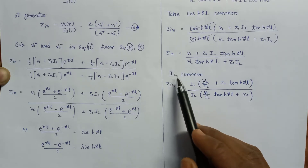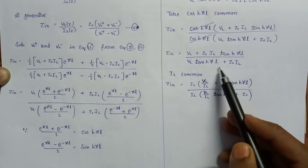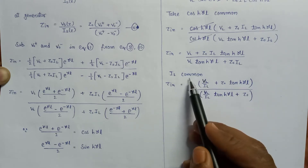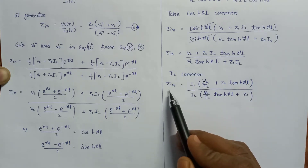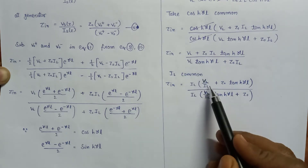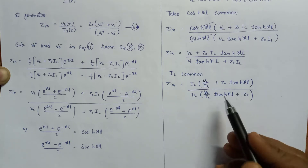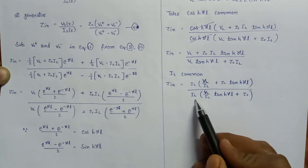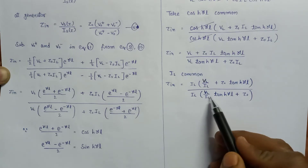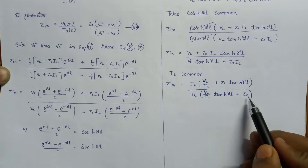Moving on to the next step, we will take I_L as a common factor from both the numerator as well as from the denominator. On taking I_L as common, the input impedance Z_in will be equals to: V_L divided by I_L plus Z_naught times tanh(γl), similarly on taking I_L from the denominator as a common factor it will become V_L over I_L times tanh(γl) plus Z_naught.